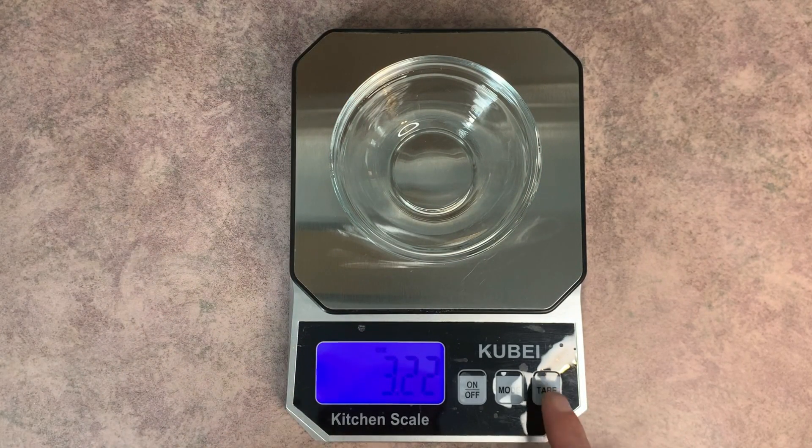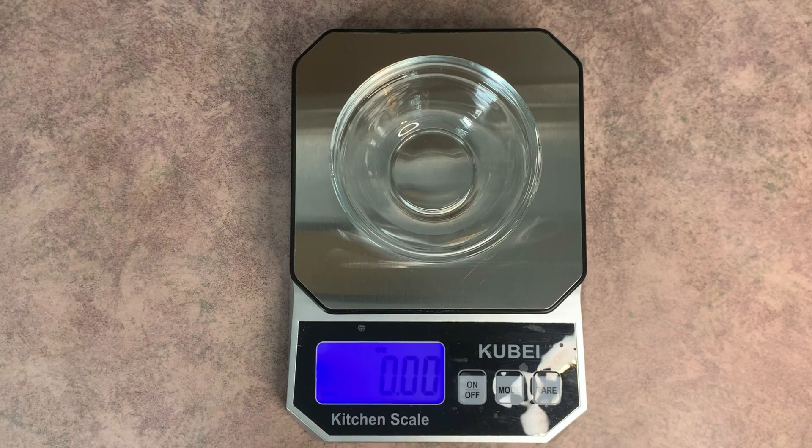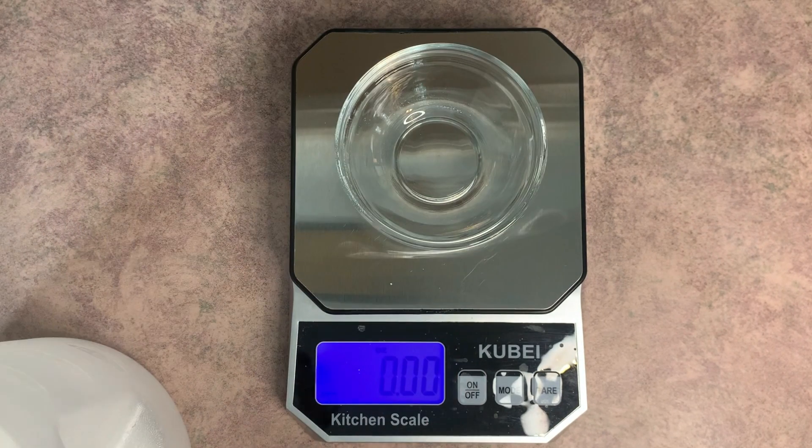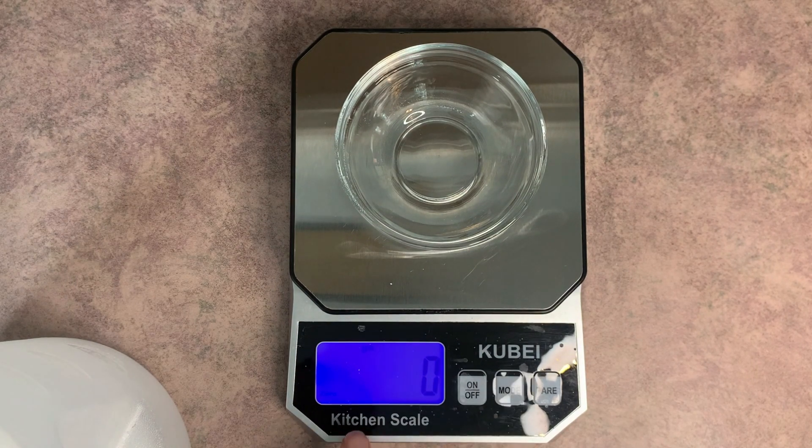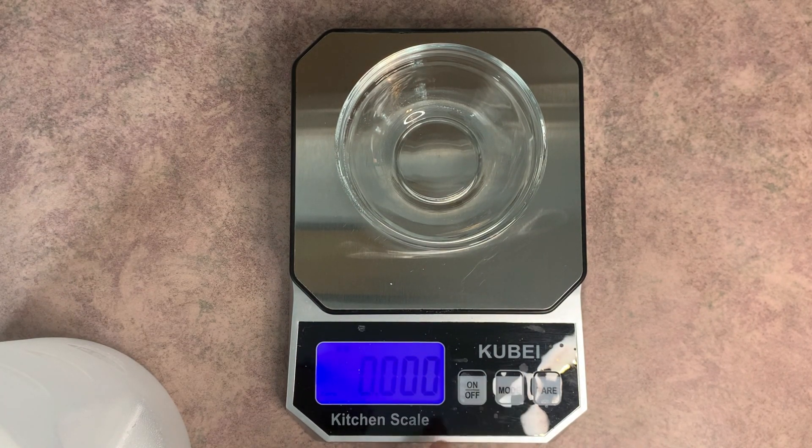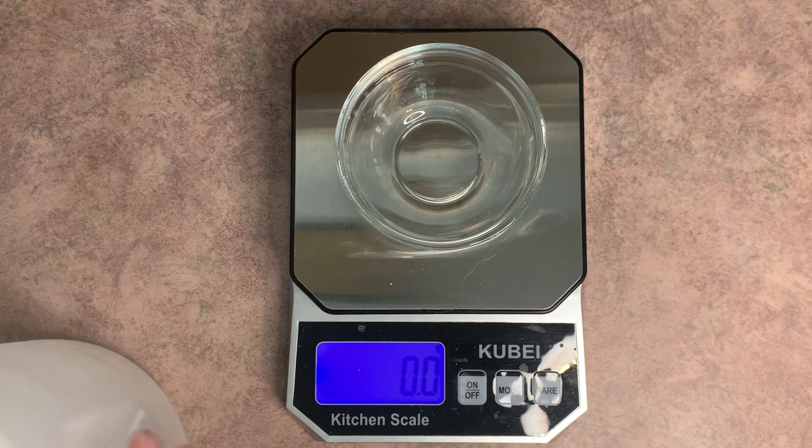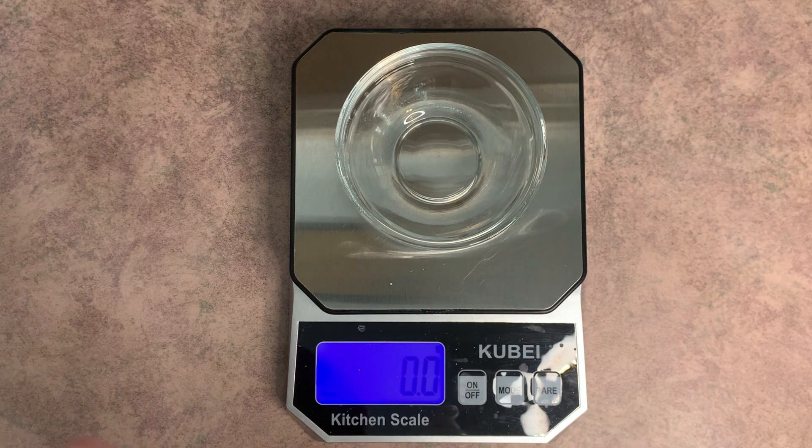So what you want to do is go ahead and put a container on your scale, push the tare button which is going to give you all zeros while the container is on it. Now I'm also going to change the unit of measure. So normally I do it in ounces but in this one I'm going to do it in grams because we're not going to need very much.